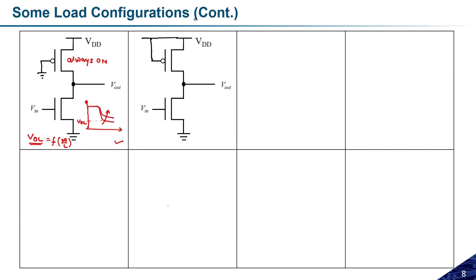If the upper transistor is always in the off state, it means this will not act as an inverter. Because this is always off, you will never get logic high. Whether Vin is zero or one, you will not get logic high, so this will not act as an inverter.